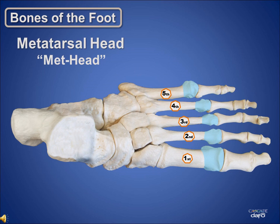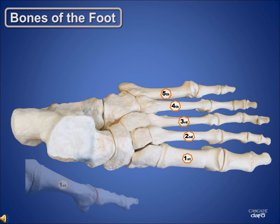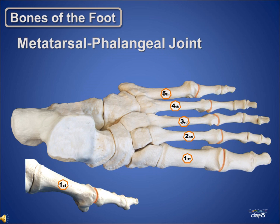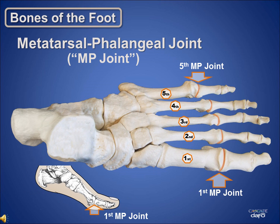The metatarsal heads take on the same numbering scheme as the metatarsal bones. So this would be the first metatarsal head, or as we would commonly say, the first methead. The joint between the metatarsal bones and the phalange bones is called the metatarsal phalangeal joint, or the MP joint. These joints too take on the same numbering scheme, so this is the first MP joint and this is the fifth MP joint. The MP joint allows the toes to flex and plays an important role in ambulation.